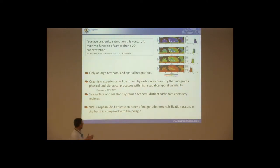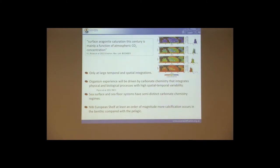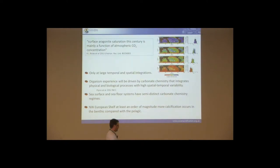There's a lot of emphasis on the sea surface, but we must also remember the seafloor systems, which have at least semi-distinct carbonate chemistry and often very distinct carbonate chemistry. On the European shelf, at least one order of magnitude — and probably two orders of magnitude — more calcification happens on the seafloor compared with the pelagic. So if we are worried about calcification, we should be quite worried about the seafloor.